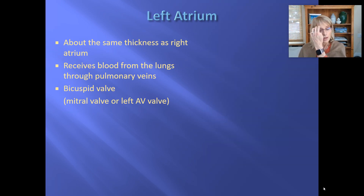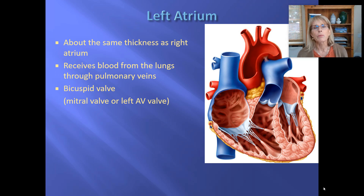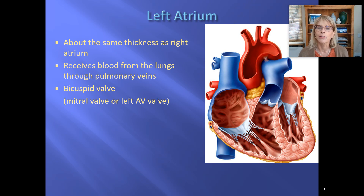The left atrium is going to be receiving blood from the pulmonary circulation and sending it to the left ventricle. The blood from the pulmonary circulation is going to be bright red because it is filled with oxygen, having just come from your lungs. Make sure you know the bicuspid valve is the same as the mitral valve, also known as the left atrioventricular valve.